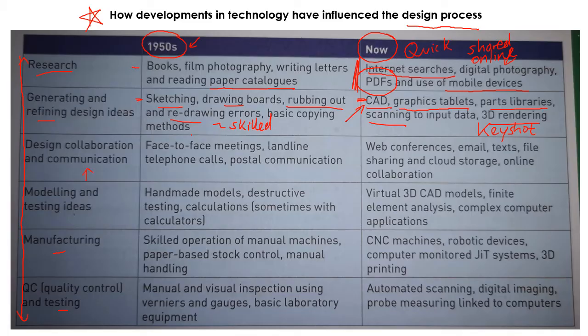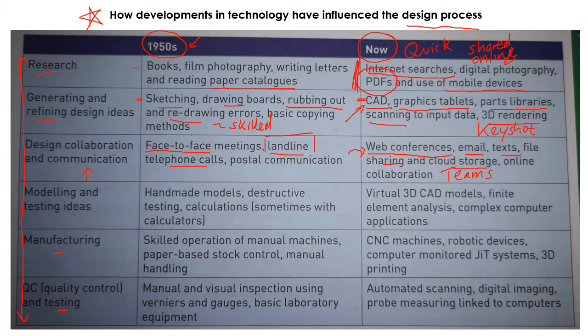Next is how you communicate during the design process. It used to be face-to-face meetings, talking over your landline, or using the post, which can be quite slow. But now we have web conferences, emails, texts, file sharing, cloud storage, online meetings, Teams meetings, and all that sort of stuff. You can see the massive difference that new tools make to speeding up our communication methods.